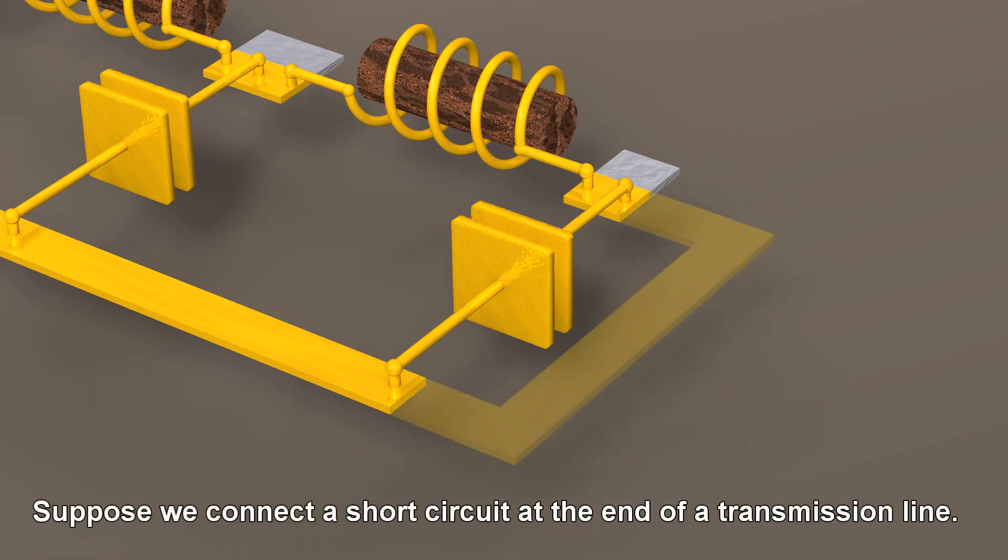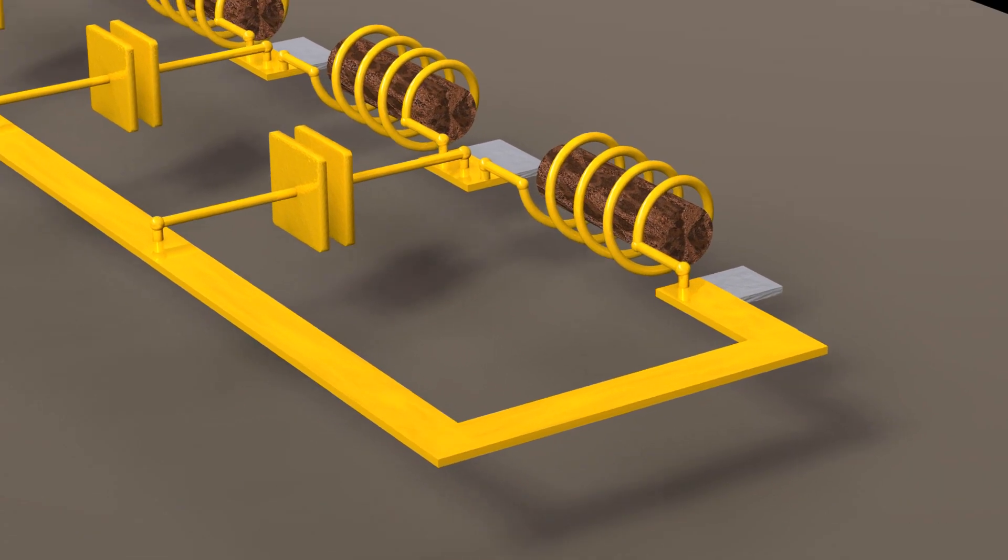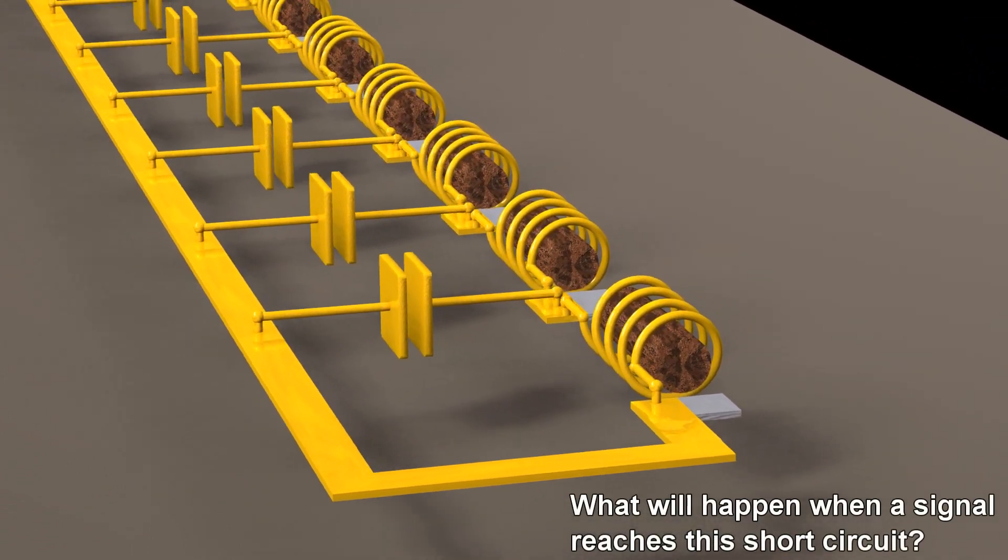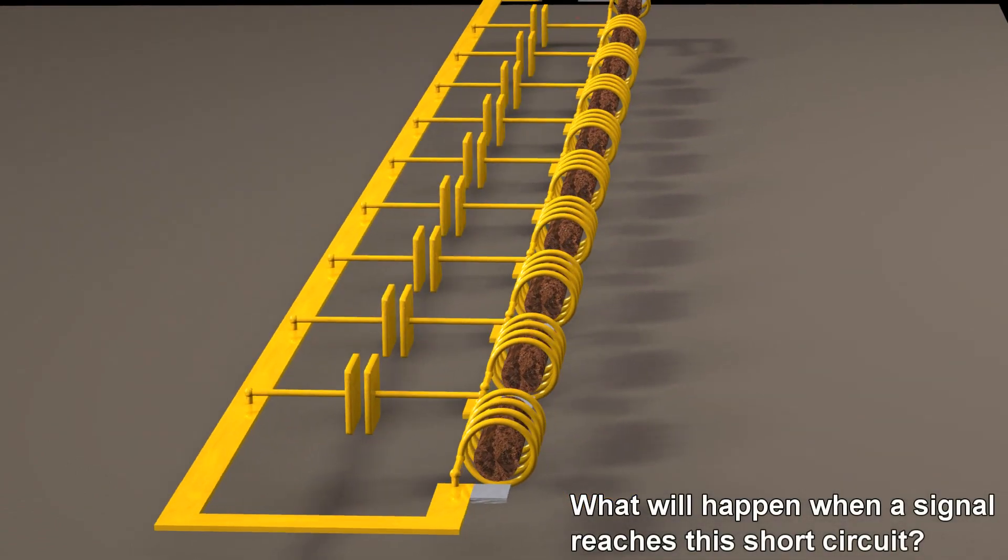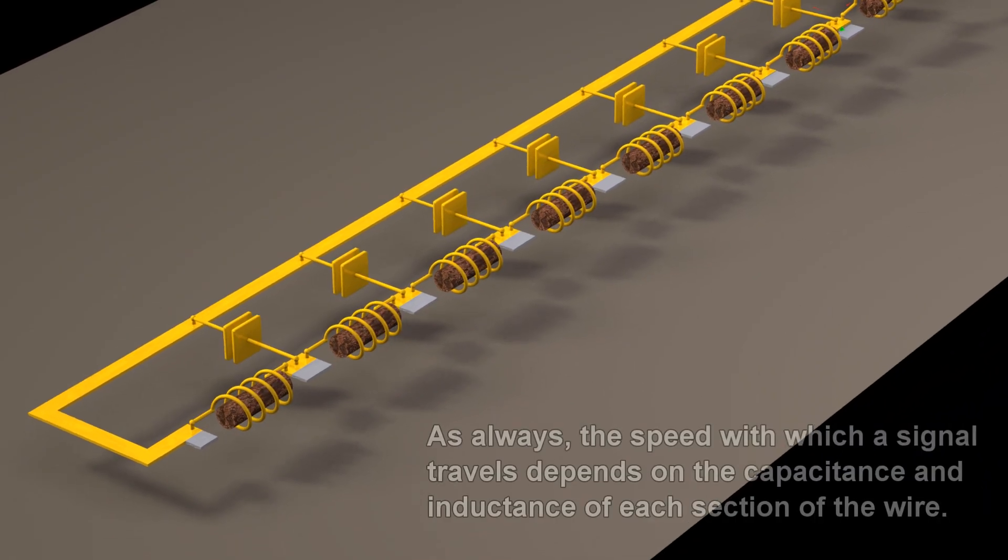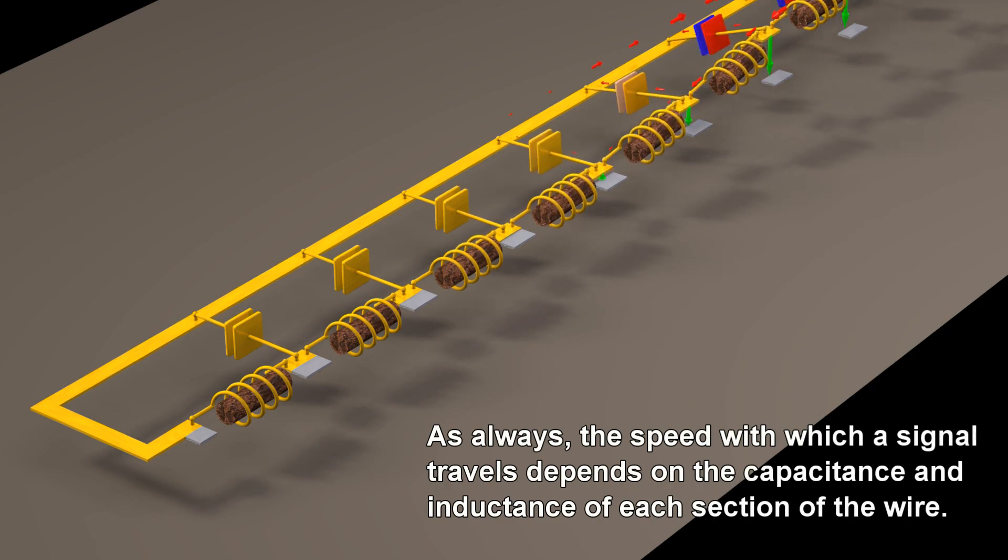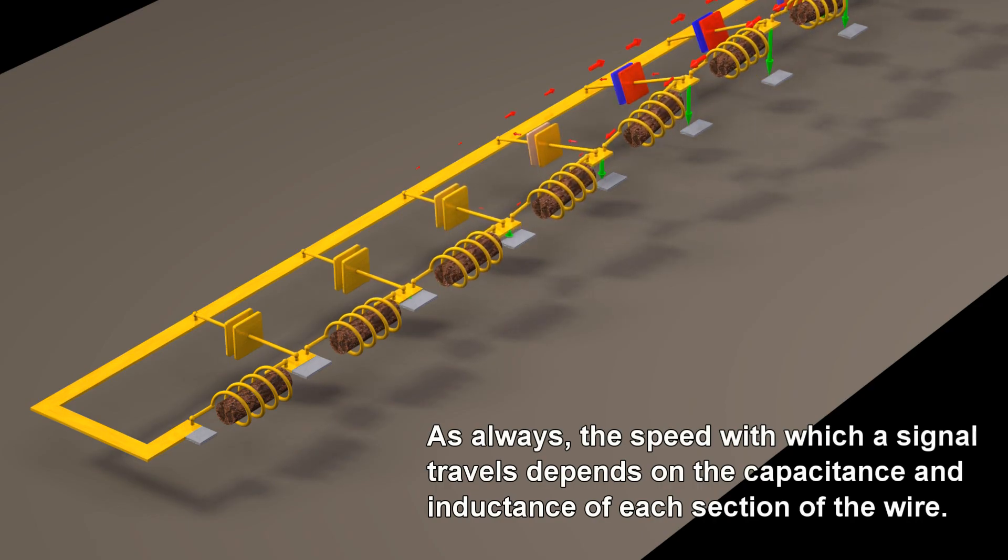Suppose we connect a short circuit at the end of a transmission line. What will happen when this signal reaches this short circuit? As always, the speed with which a signal travels depends on the capacitance and inductance of each section of the wire.